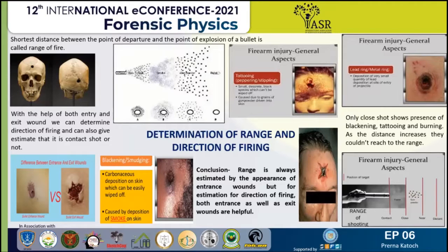We determine range of firing by the following terms: burning, blackening, and tattooing. I am giving you a few examples. In the case of a contact shot, burning, blackening, and tattooing — everything is present. Here is the question of how we differentiate between these terms, so let me introduce these terms to you.